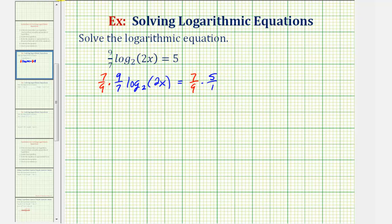So notice on the left side, because we're multiplying reciprocals, this simplifies nicely to one. So we just have log base two of two x equals on the right side, nothing simplifies. We just have 35 ninths.